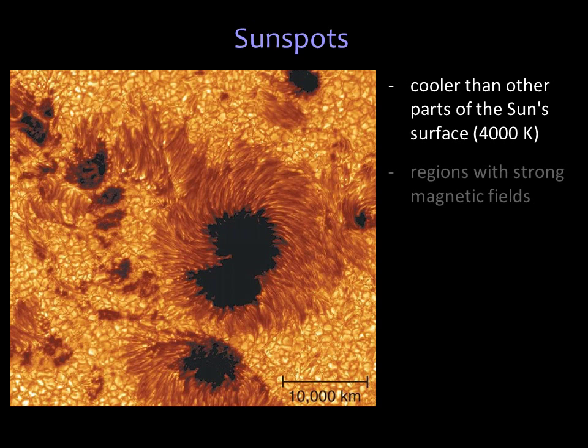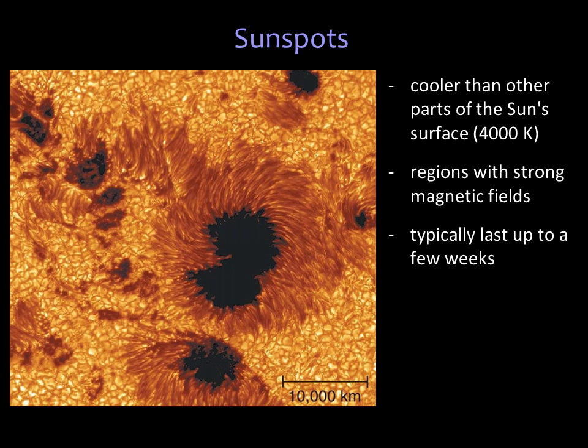Sunspots are cooler because magnetic field lines suppress convection within the sunspot and prevent surrounding plasma from entering the sunspot. With the hot plasma unable to enter the region, the sunspot plasma becomes cooler than that of the rest of the photosphere. Sunspots typically last up to a few weeks and they dissolve when their magnetic fields weaken and the hotter plasma is allowed to flow in.